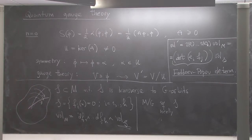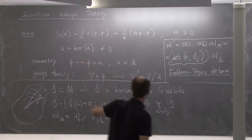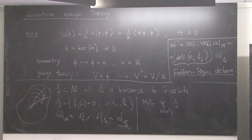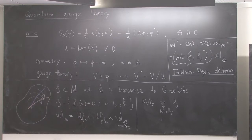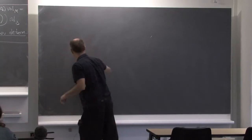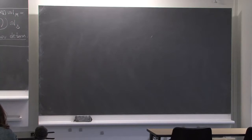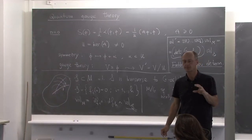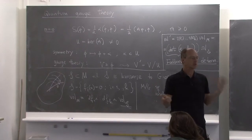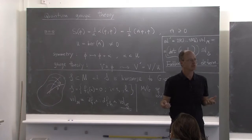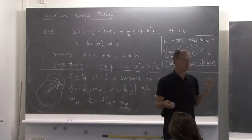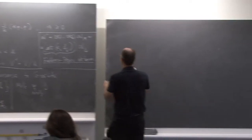Why are we talking about this? What does it have to do with our N equals zero gauge theory? Recall that quantum field theory takes in two ingredients: the action functional, which is basically an ingredient from classical field theory, and the integration measure, which is in some sense a purely quantum ingredient.